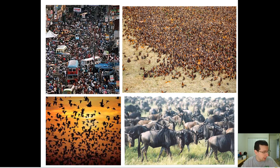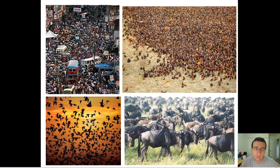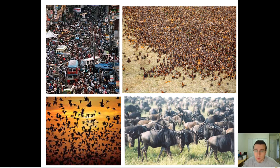Whichever way you categorize species, what you need to know is that a population is a group of organisms of the same species living in a similar environment or within the same general ecosystem. What happens to populations is very important for ecology because it determines what happens at the higher levels — the community, ecosystem, and biome levels of the world. So let's talk about population ecology in a variety of ways.